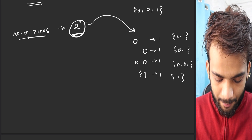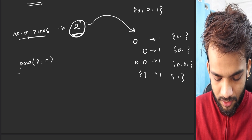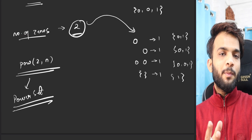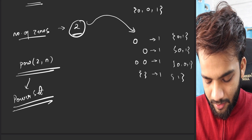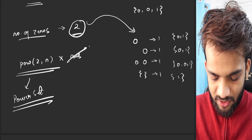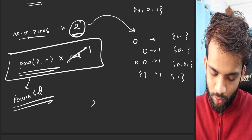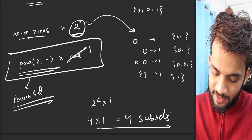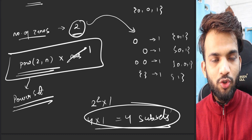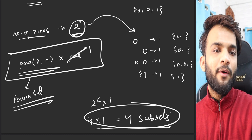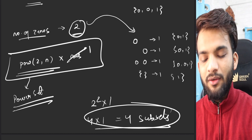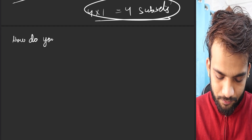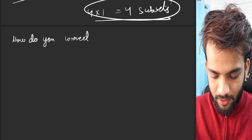How many ways can you represent those two zeros? It's 2 to the power n from the power set algorithm. So the number of ways is 2^2 times the original answer — 4 times 1 equals 4 subsets. That's one approach: compute the number of zeros, then multiply 2^(count of zeros) by whatever answer you're getting.